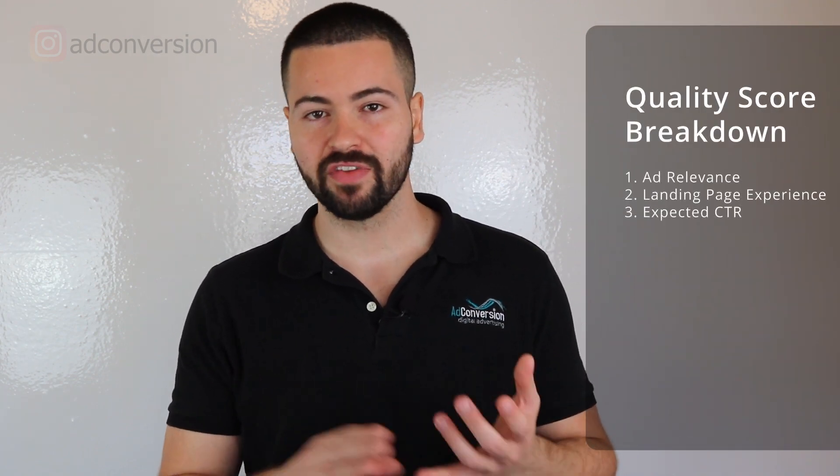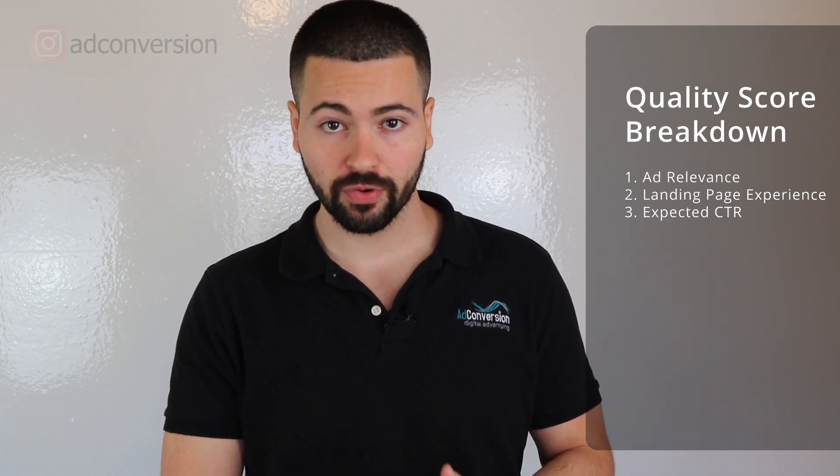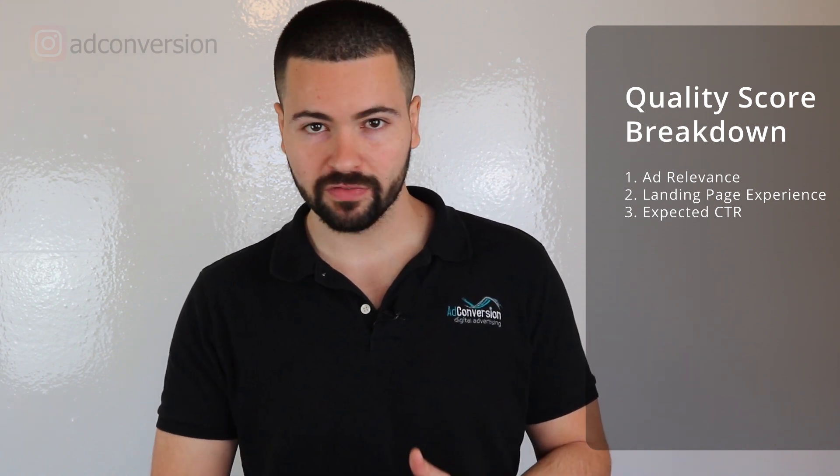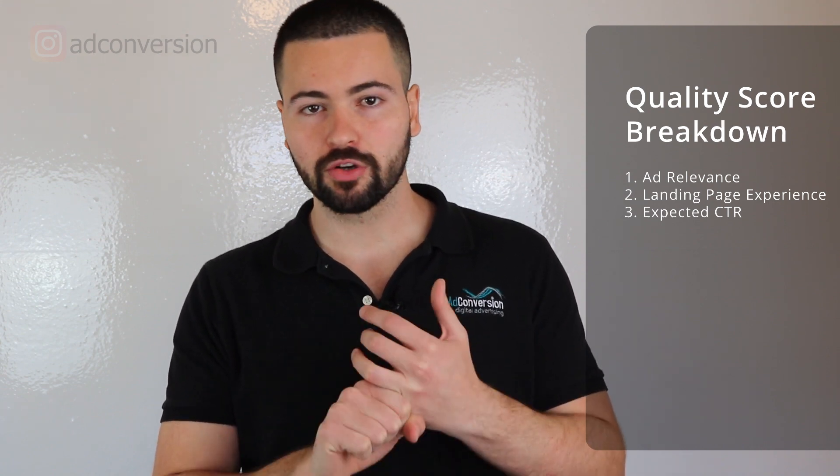To recap: when it comes to lowering your cost per click, focus on improving your quality score, which is comprised of ad relevance, landing page experience, and expected click-through rate. For ad relevance, group your ad groups correctly with relevant keywords and use those keywords in your ad copy. For landing page experience, maintain message match and use the Unbounce tool for further insights. For expected click-through rate, test ad copy religiously, use ad extensions, and implement negative keywords to block irrelevant searches and irrelevant impressions.